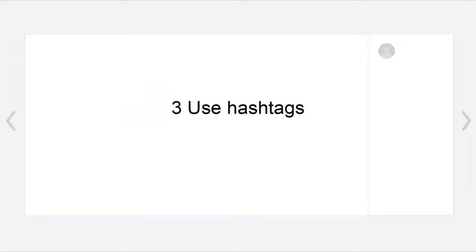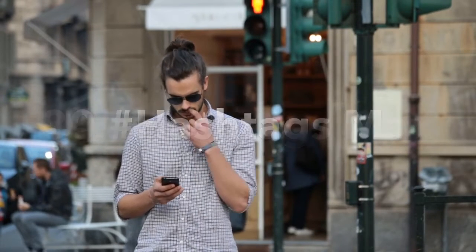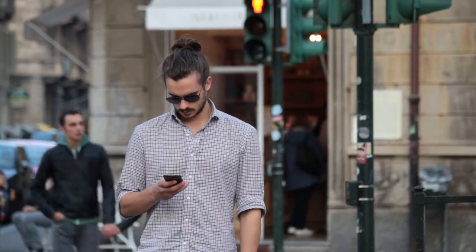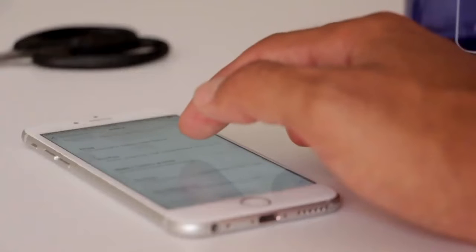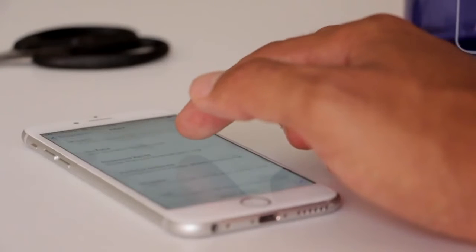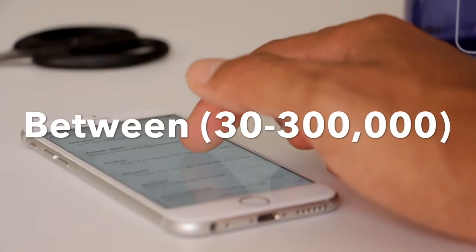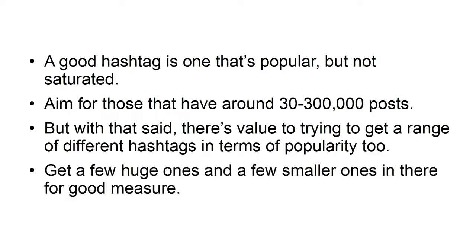Tip 3: Use Hashtags. You get 30 opportunities to use hashtags for each photo, so use them all. If you had 30 opportunities to play the lottery for free, would you enter just once and leave it at that? A good hashtag is one that's popular but not saturated. Aim for those that have around 30 to 300,000 posts. There's also value in trying to get a range of different hashtags in terms of popularity.